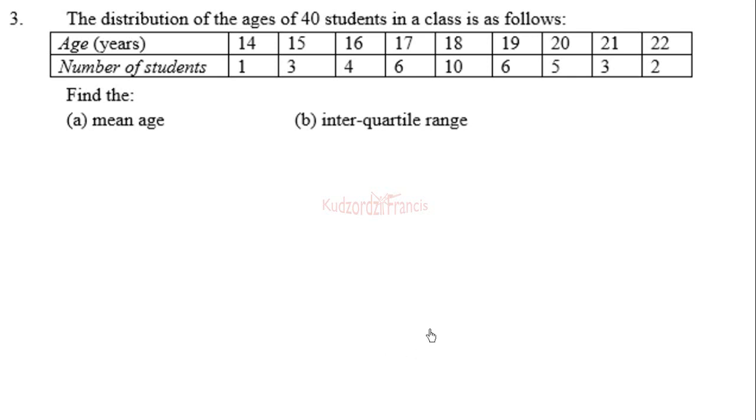WASSCE 2017 December question 3. The distribution of the ages of 40 students in a class is as follows: